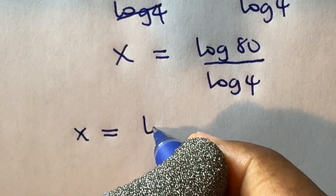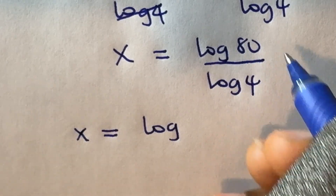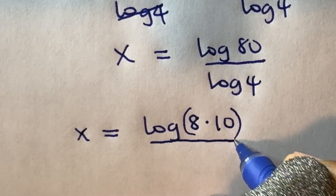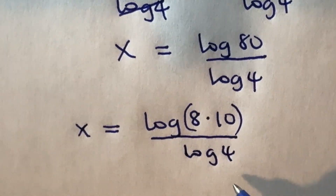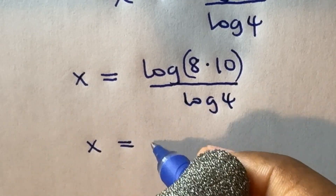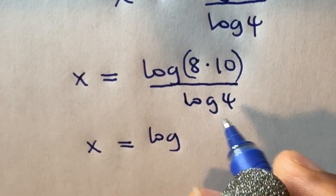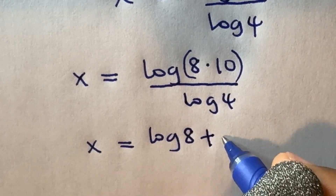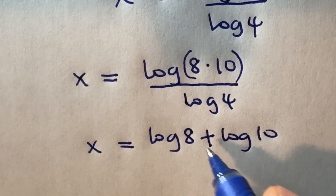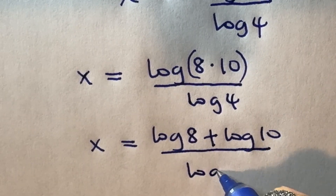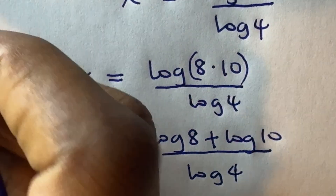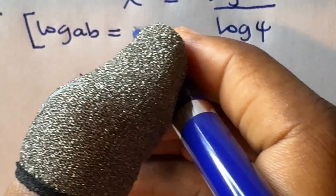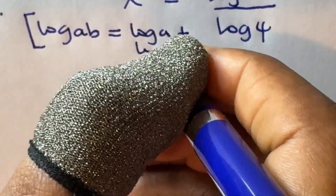is equal to log 80 divided by log 4. Then we will say x is equal to log of 80, which can be broken down as 8 times 10, divided by log 4. I can separate this product into the addition of individual logarithms, so this becomes log 8 plus log 10, then divided by log 4. This is according to the law of logarithm: log(a × b) = log a + log b.